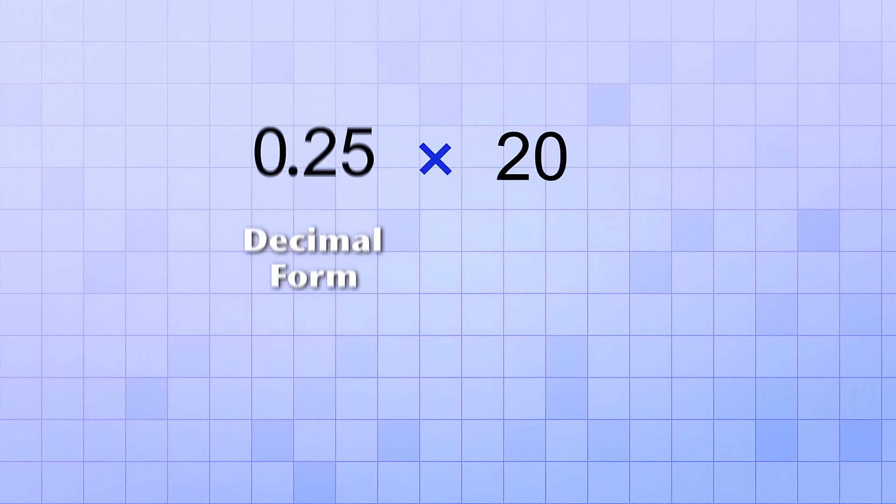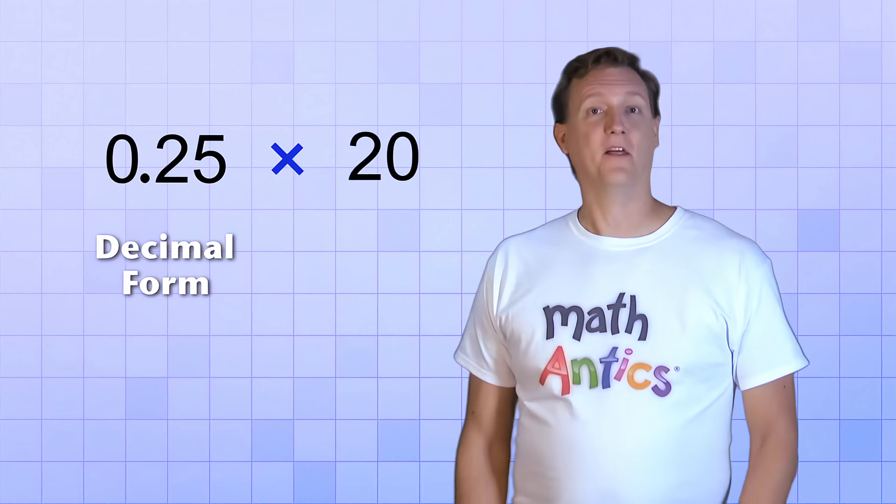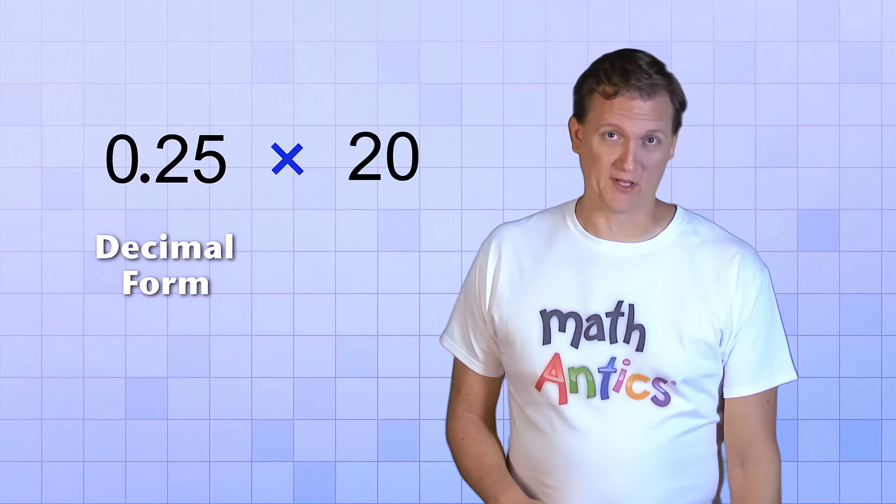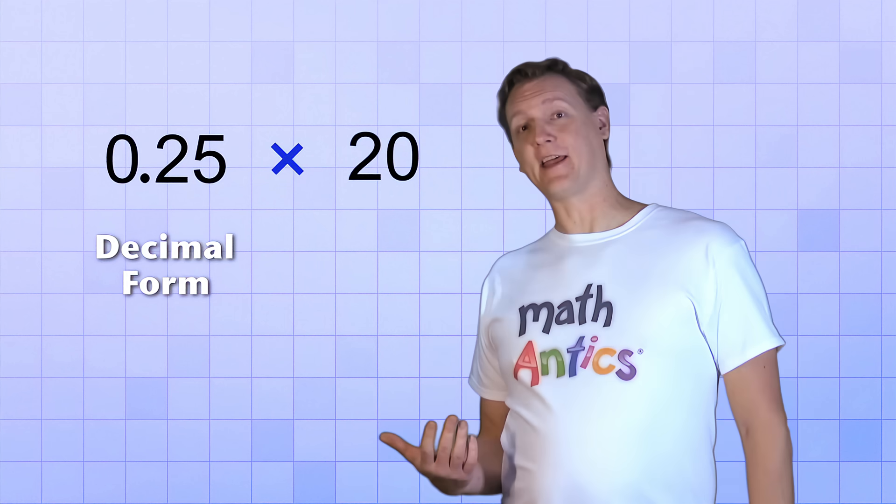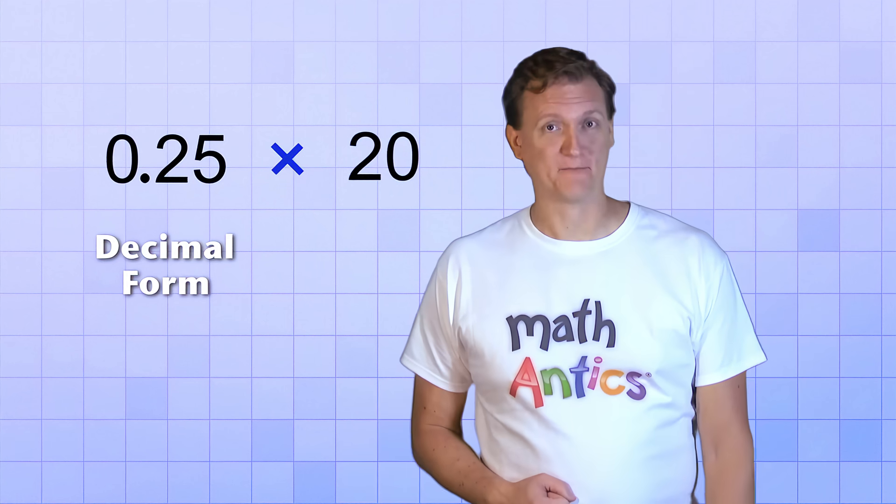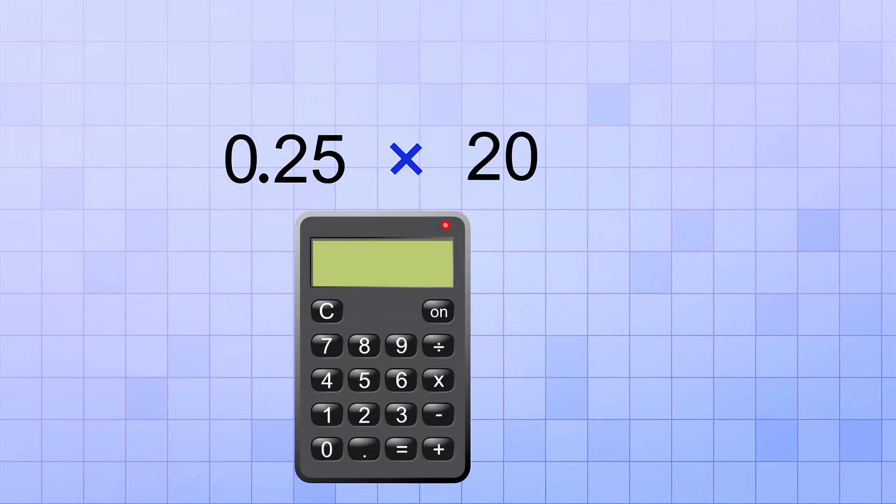Next, we'll replace the percent, but with its decimal form this time. 25% is the same as the decimal 0.25. Then, all we have to do is multiply. And although I could easily do the decimal multiplication by hand, I happen to have a calculator. So I'm going to use it. I just enter 0.25 times 20, hit equals, and I get 5. Yep, that's the same answer we got when we used the fraction form of 25%. Oh yeah!